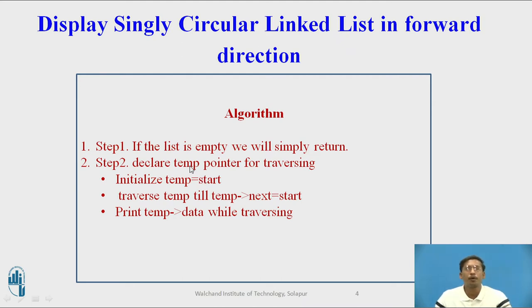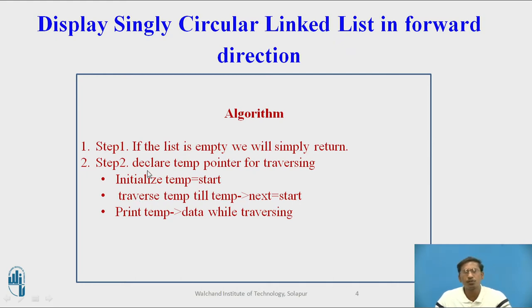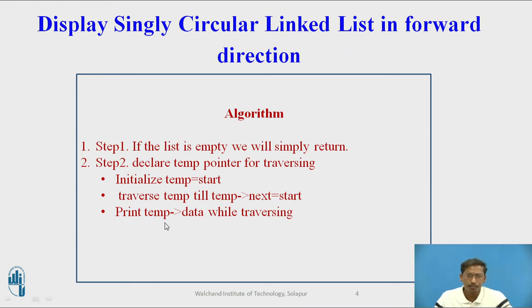The first node is pointed to using the start variable, where start is the global variable. Traverse temp till temp->next is not equal to start. You will traverse temp in forward direction from the first node to the last node. To find out whether it is the last node or not: the last node's next part will contain the address of start. That's why we use the condition — traverse temp till temp->next equals start. Once temp is pointing to the last node, we print and return from the function. Every time while traversing, you print temp->data.